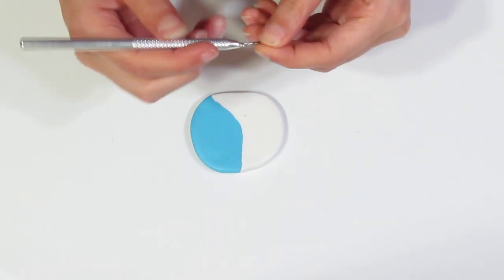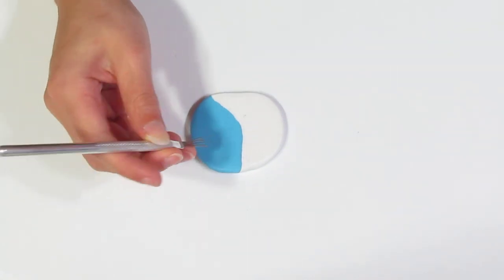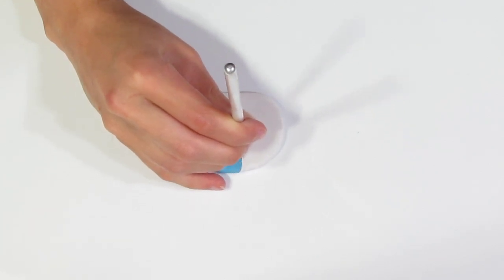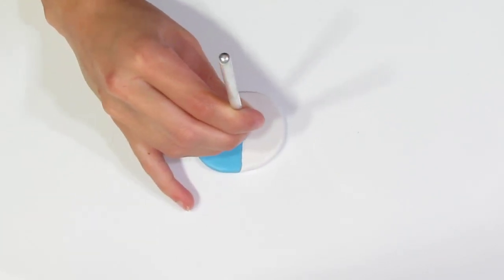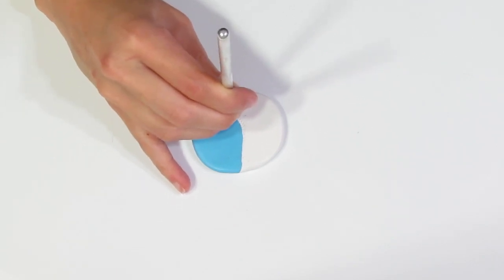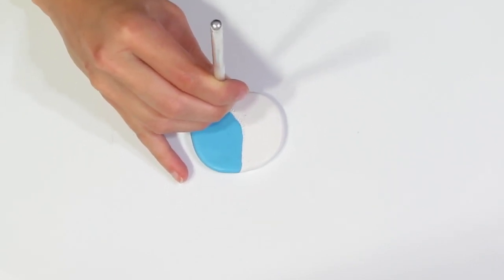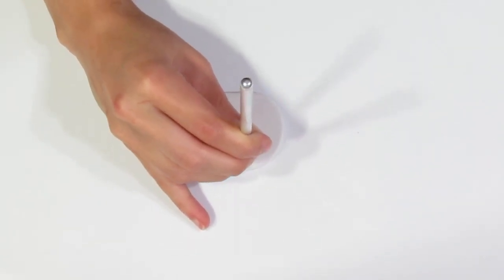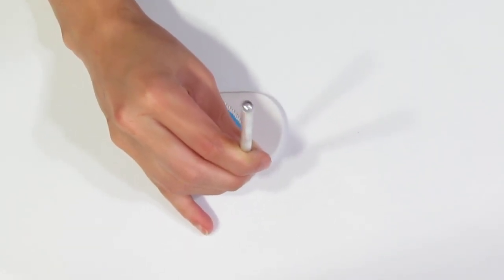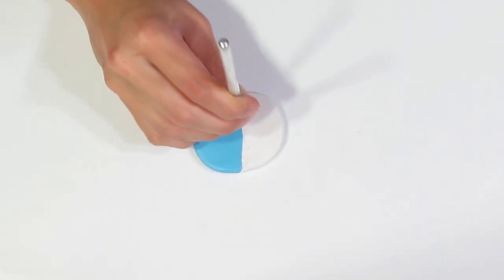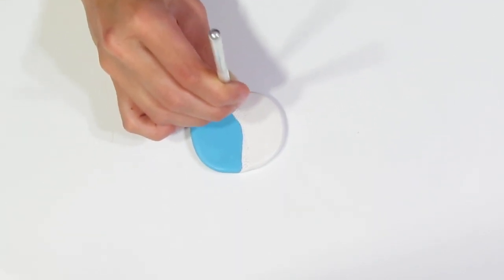Then I want you to take a sculpting tool. You can use a piercing pin as well. I want you to just go along the water line there, and start texturing this because we want this to be sand.